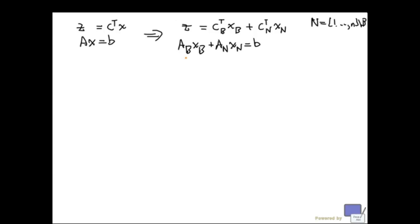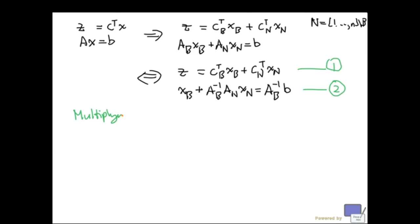Now, what I can do is, I can write this as the following. So I multiply both sides by A B inverse. So let me call this 2 and this 1. And if we multiply 2 on the left by C sub B transpose, we get the following. So this is true, and now I add this to 1 to obtain an equivalent system.